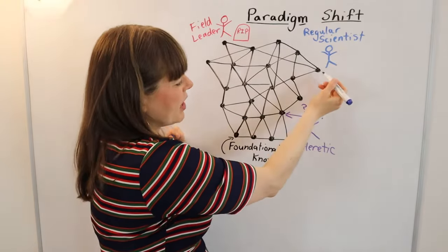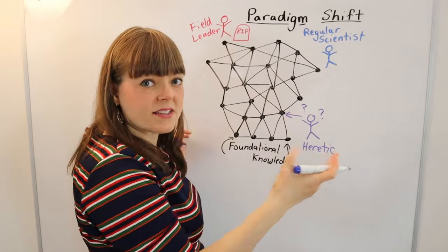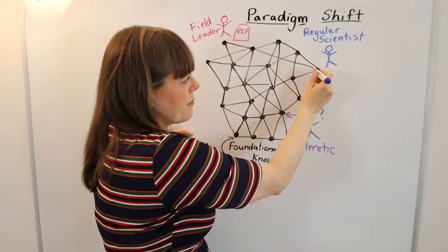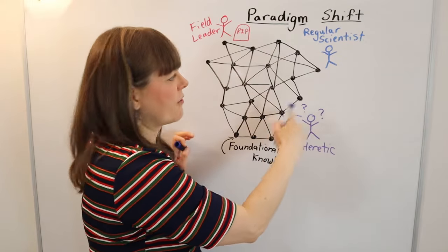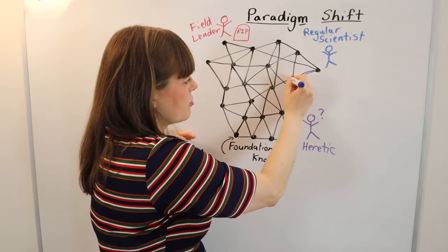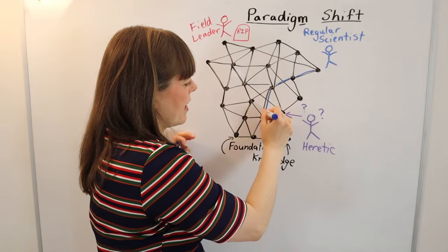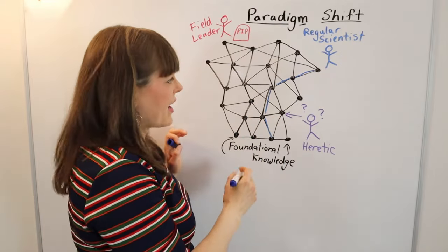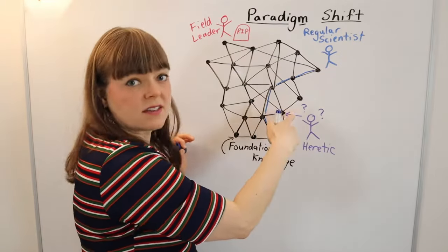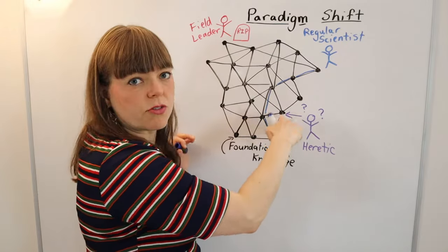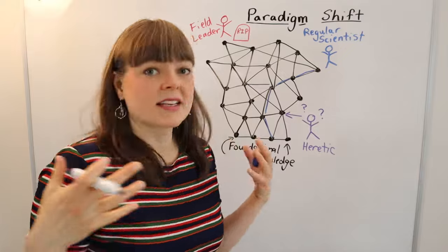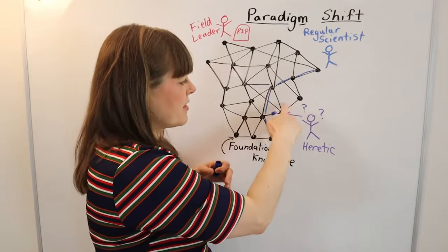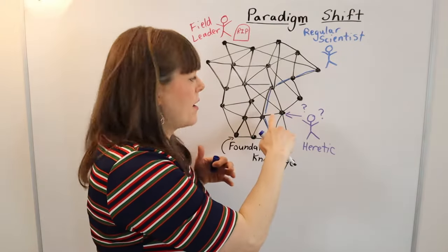But oftentimes they will actually make connections to say, you know what, the knowledge that I'm building upon doesn't actually fully require this part of foundational knowledge. If I'm tracing my new knowledge back, I can trace it back in a way that doesn't necessarily have to go through this point. And so I'm actually more okay and less threatened by the community that's questioning this piece of knowledge.